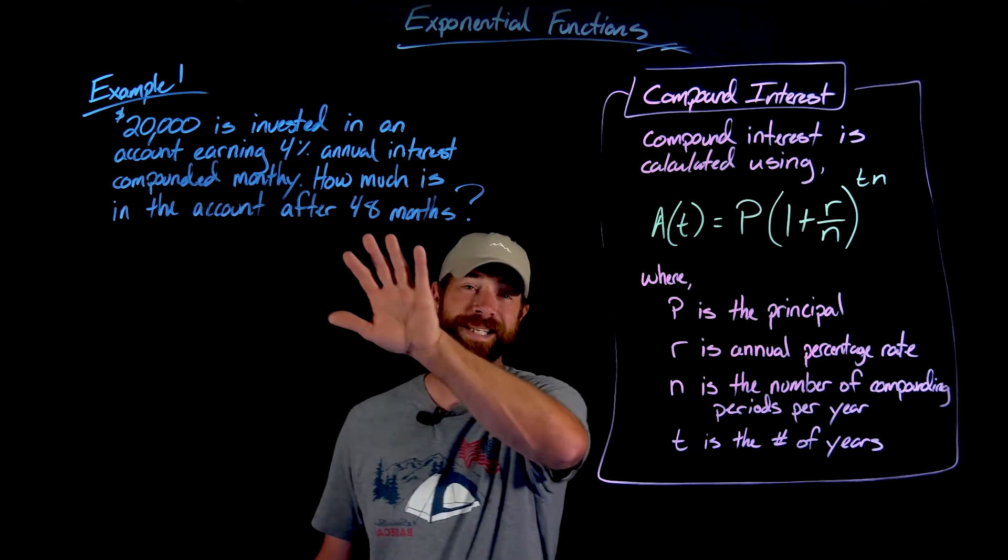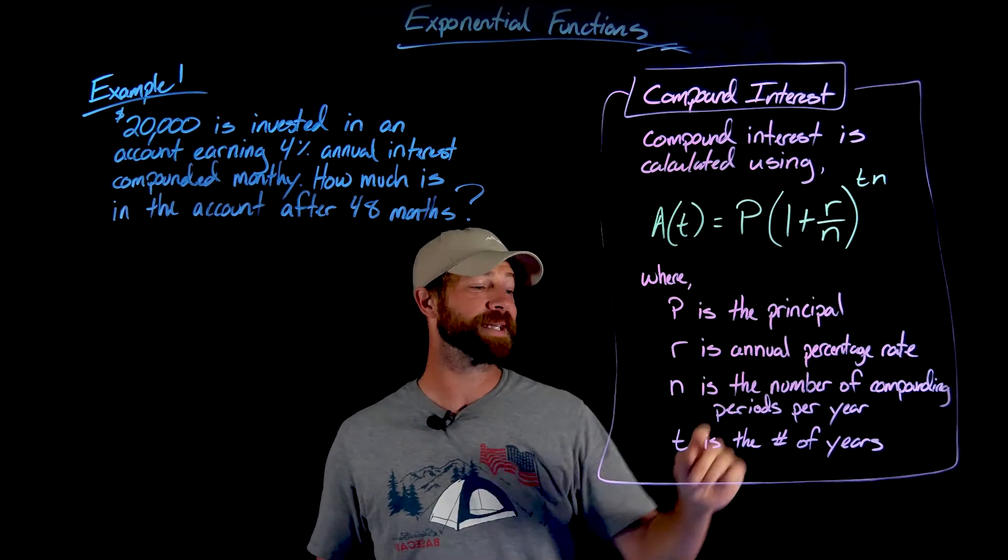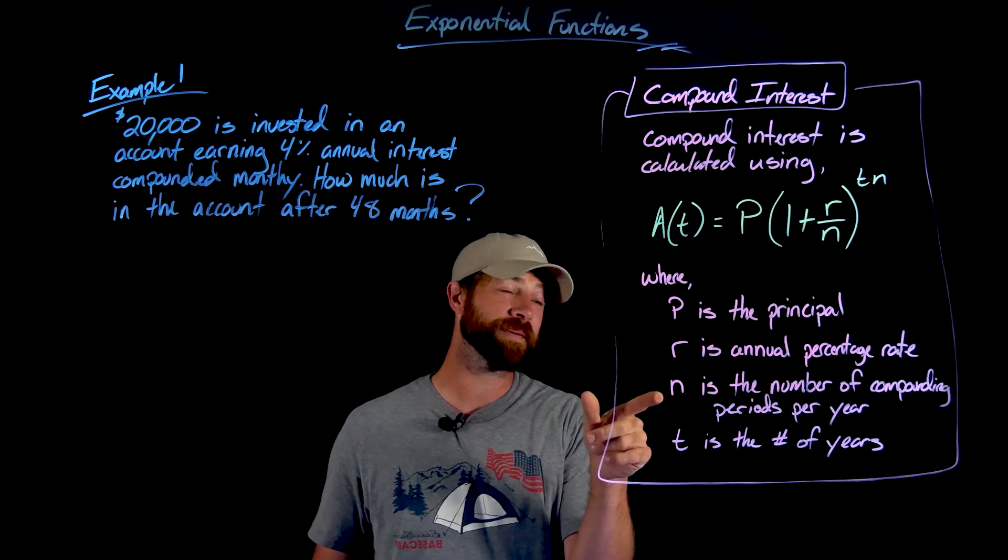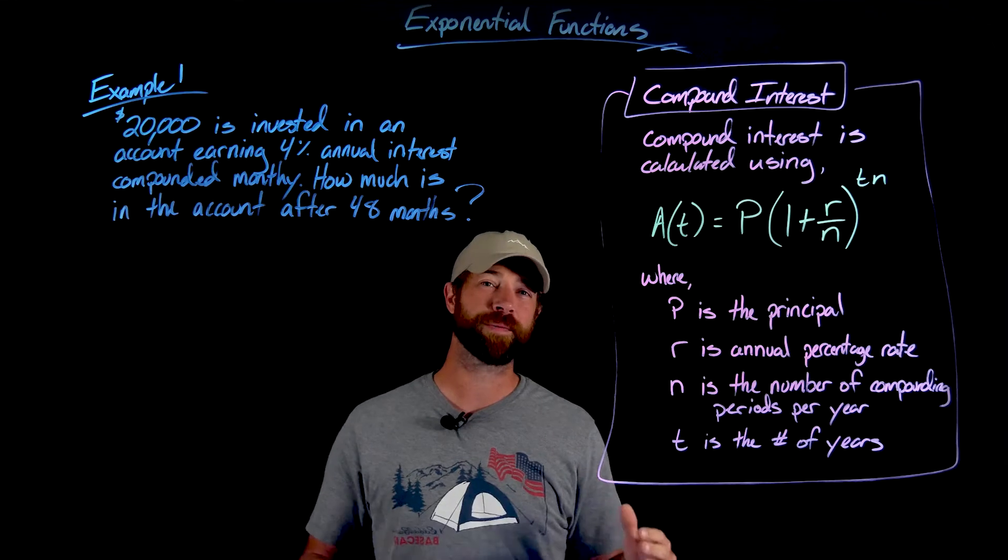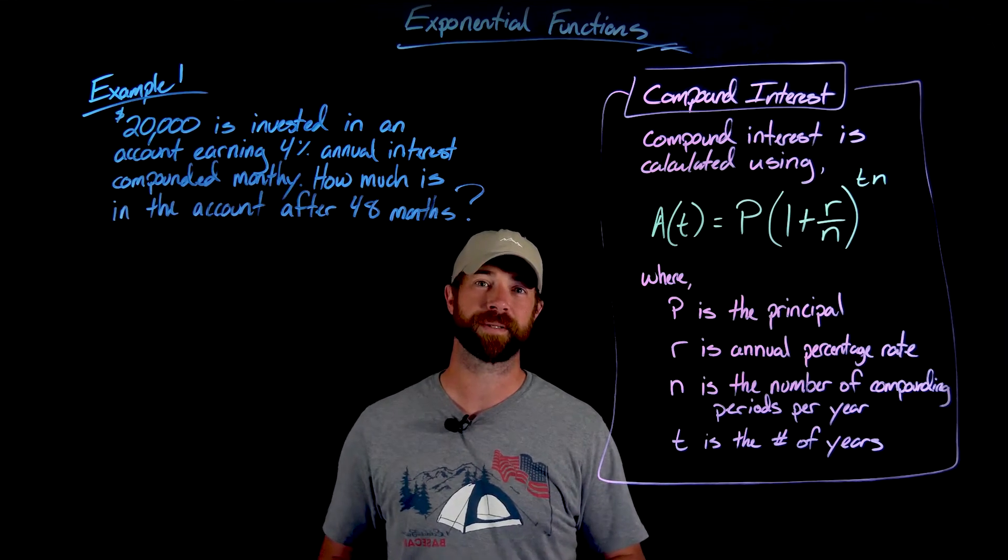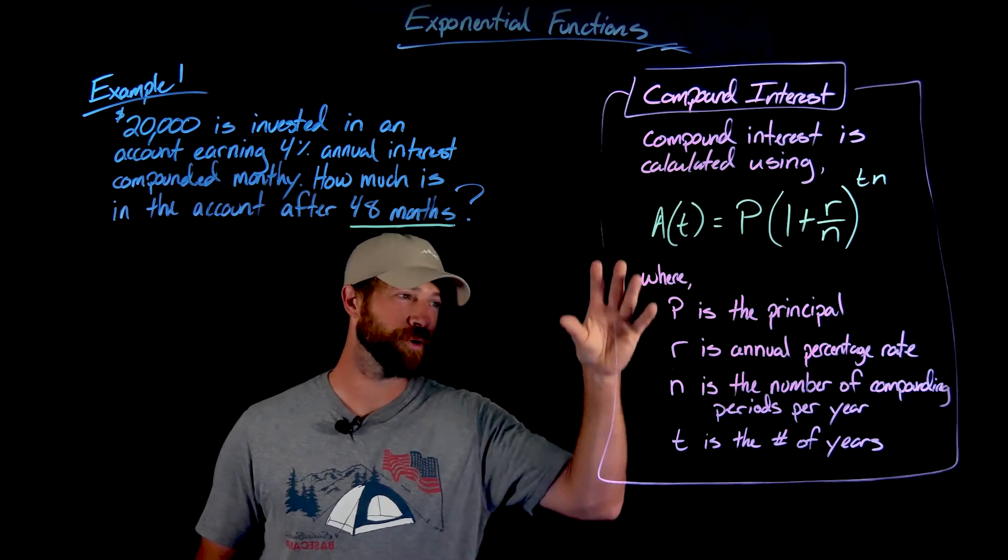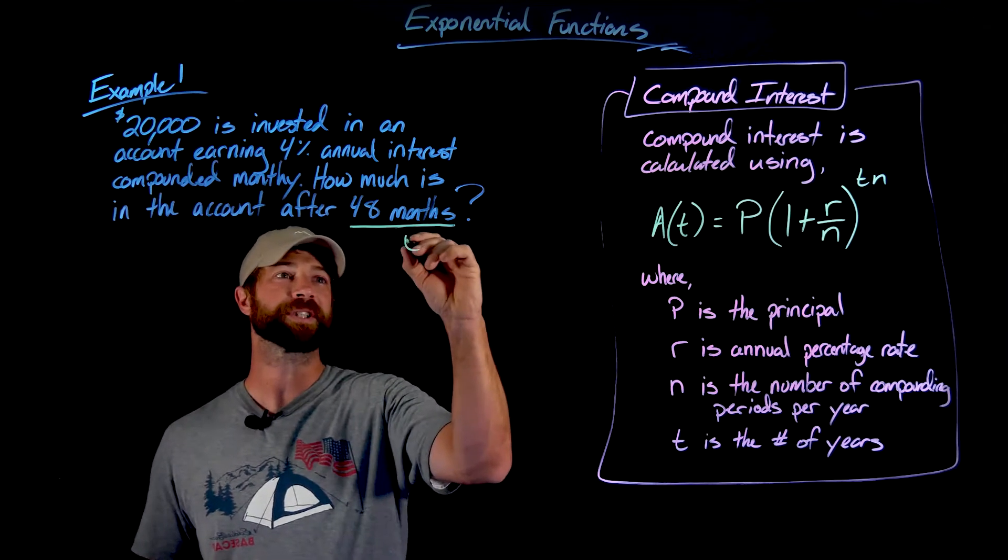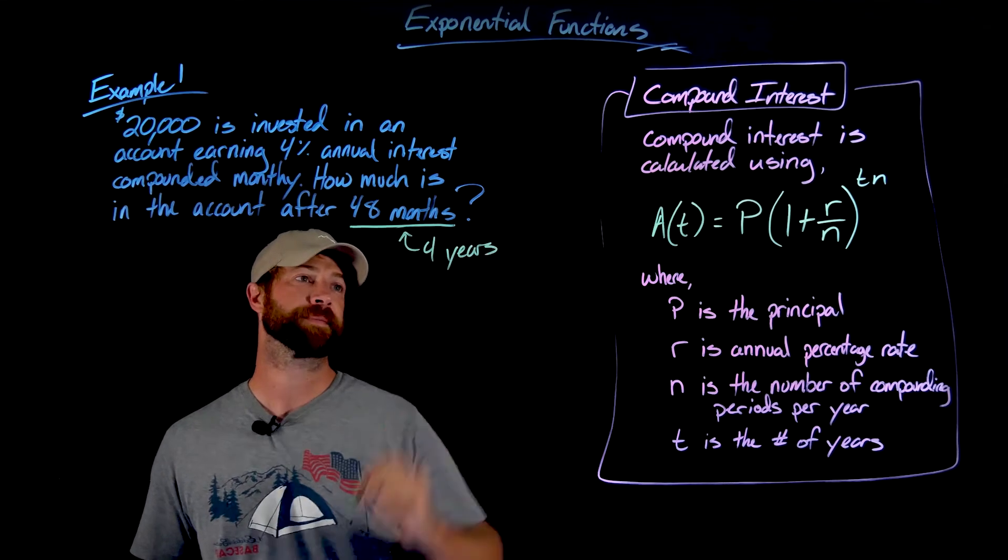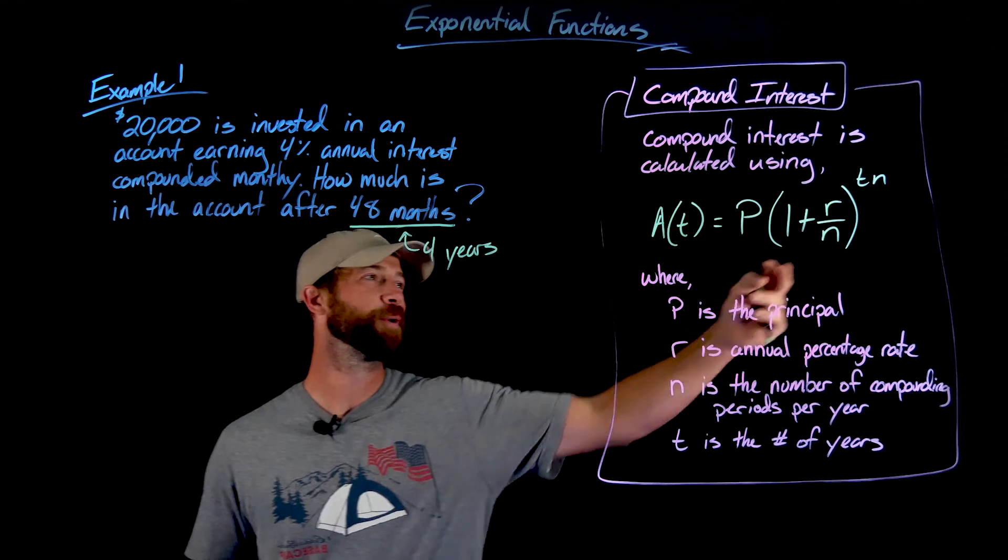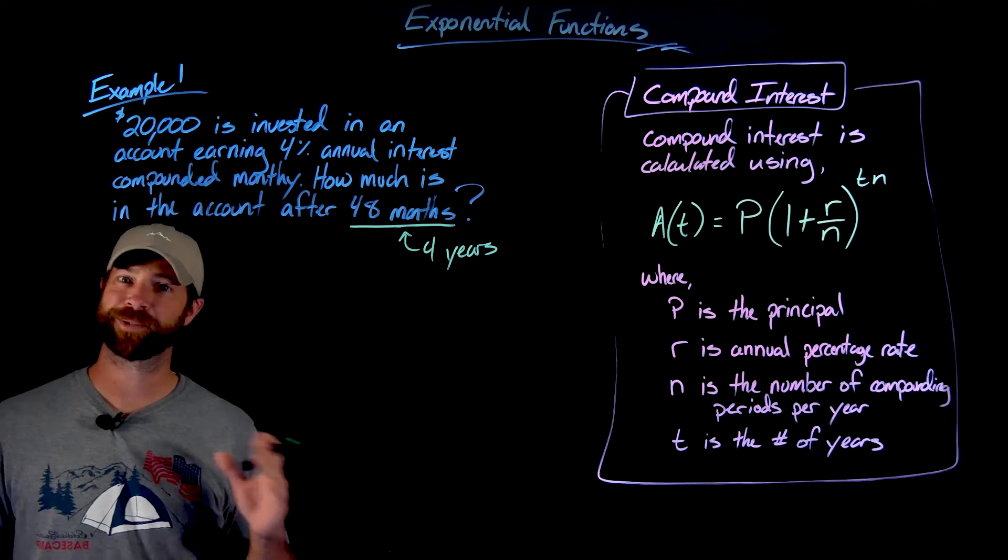Finally, I just want to say, because it's going to show up in this situation right here, this t times n is the number of years times the number of compounding periods per year. So what this is really calculating is the overall number of compounding periods. Importantly, there's no place for us to put the 48 in this formula given this layout right here, but we will just translate this into 4 years. Though you'll see the role of the 48 when we put it into the formula. All right, so let's put this all together.